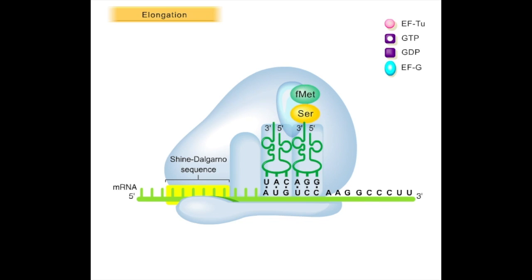Once the peptide bond has formed, there remains an uncharged tRNA in the P site and a tRNA with a growing polypeptide chain in the A site. The ribosome now moves one codon along the mRNA with the help of EFG and another GTP.